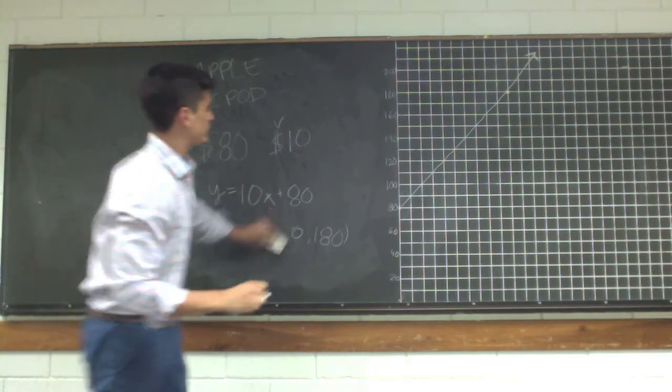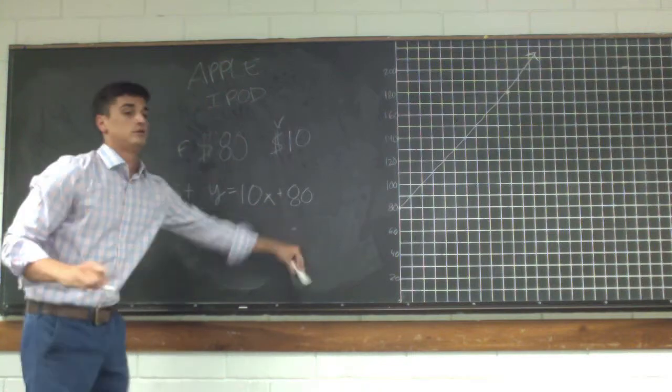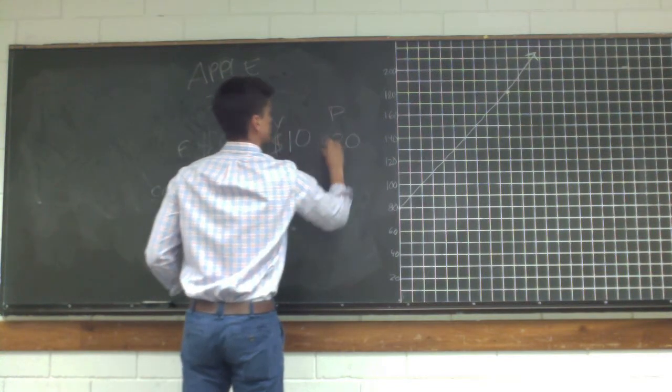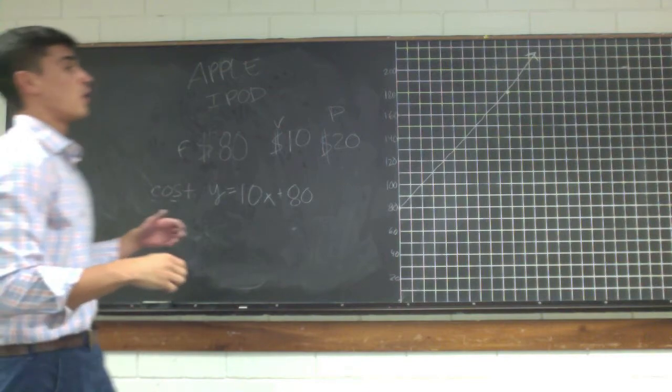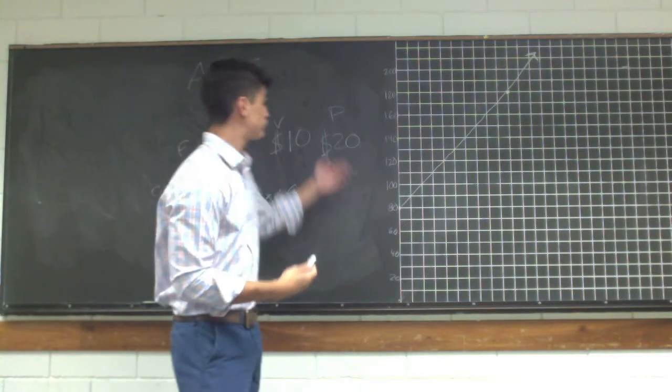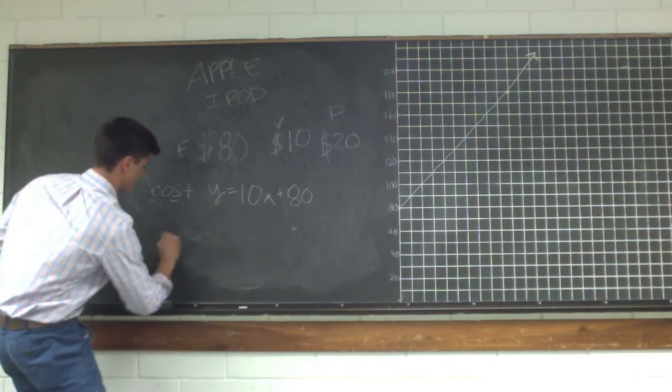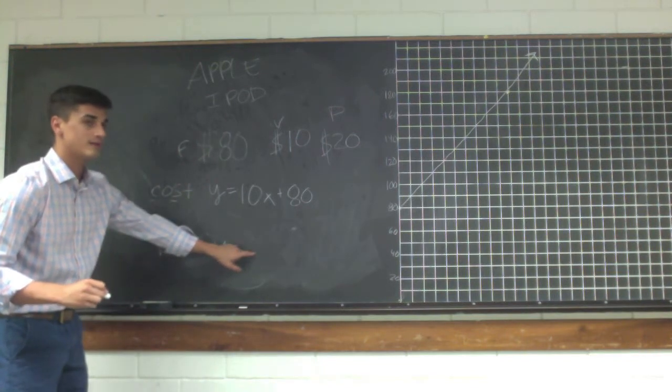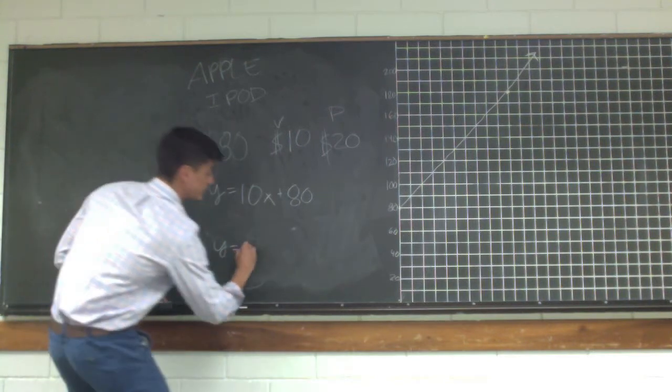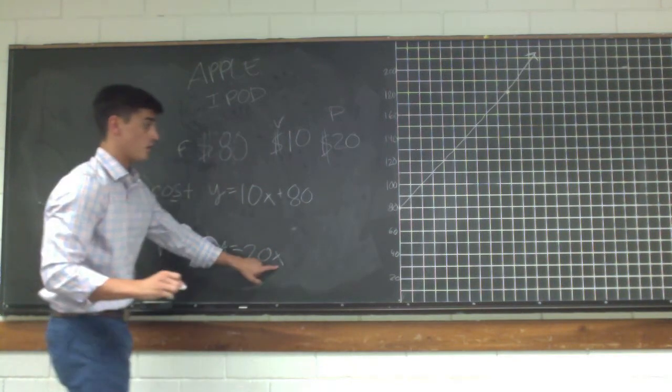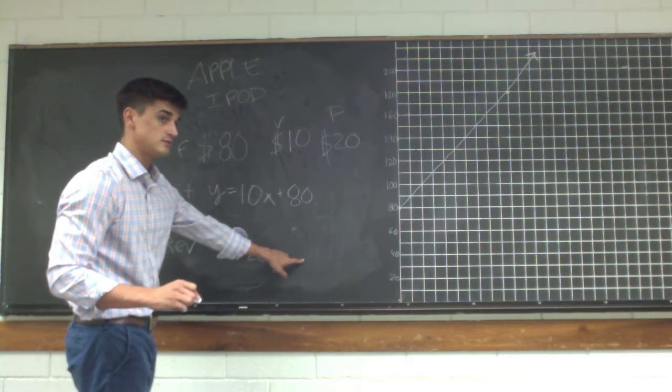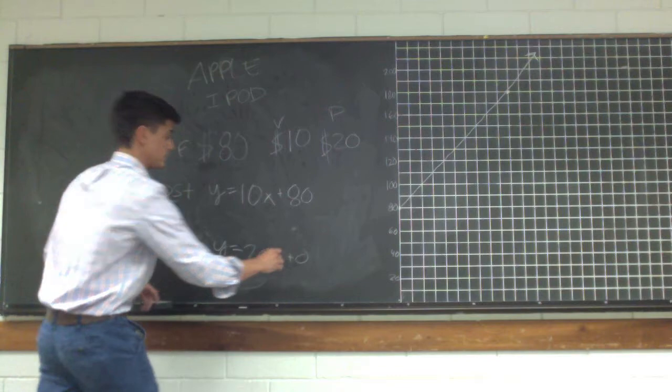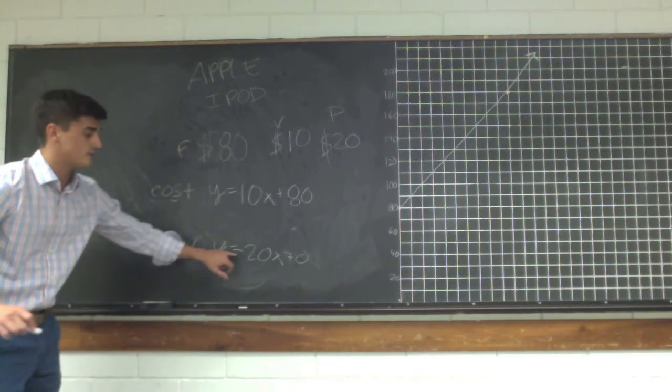Now, how much do you want to sell these iPods for? $20. $20. Okay. So we're going to sell them for a price of $20. Now, can we do a slope intercept form of this revenue function, how much money you're going to get? Okay, so our revenue function would be y equals what times x? 20. X is the number of units. Okay, so $20 times the number of units we're going to sell. And what's our b in this case? Zero, exactly. If we don't sell any units, we're not making any money. So our b is zero. We don't have a b. So now, can we graph y equals 20x? Absolutely.